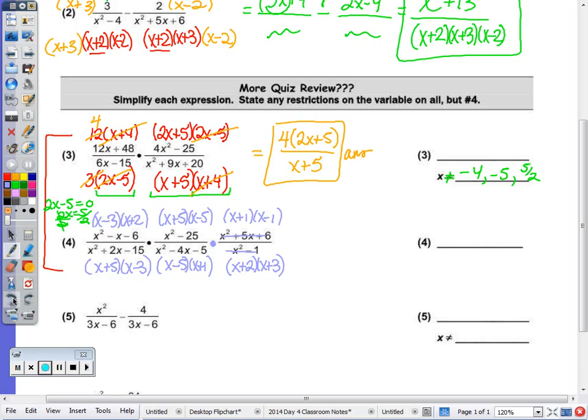So without doing the restrictions, now I'm going to just start canceling my common factors out. Let's do an x plus 5 and an x plus 5, x minus 3, x minus 3, x minus 5, x minus 5, x plus 2, x plus 2, x plus 1, x plus 1. And we're left with x minus 1 over x plus 3.